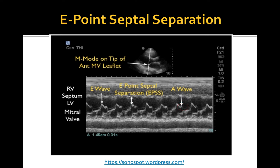The EPSS is the minimal distance between the E-wave and the septum, and is normally less than 6.5 mm in dogs. One human study demonstrated that emergency physicians are able to accurately estimate the ejection fraction using EPSS, highlighting its value in identifying patients with abnormal contractility in certain situations.